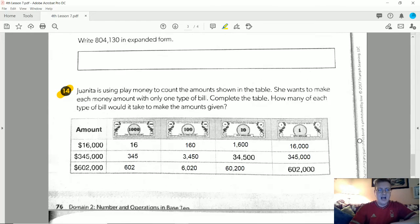Number 14, I went ahead and typed this in just to save time. What I would do to start with is start with the ones place and one dollar bills. I would use 16,000 for this one, 345,000 for this one, and 602,000 for this. Then I can go ahead and shrink the number by 1 zero each time, and each time that I do that, I would be multiplying by a power of 10.